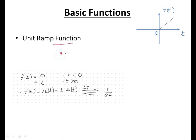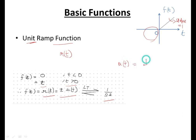The next function is the ramp function, denoted by r(t). It is a straight line passing through the origin such that its slope is 1, hence it is known as the unit ramp function. r(t) = 0 when t is negative, and when t > 0 its value is t. Therefore we can write r(t) = t·u(t), and its Laplace transform is 1/s². The Laplace transform of the step function is 1/s and of the ramp function is 1/s²; multiplying by t in time domain means dividing by s in the s-domain.